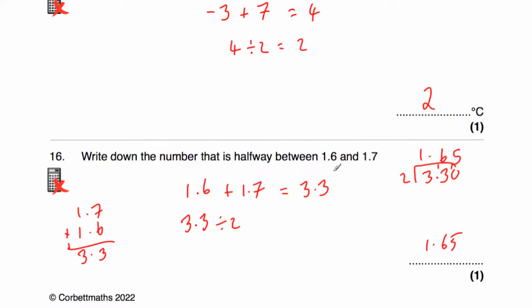If you have 1.6 and 1.7, halfway between would be 1.65. I can imagine a number line going 1.61, 1.62, 1.63, 1.64, 1.65 — which would be right in the middle.